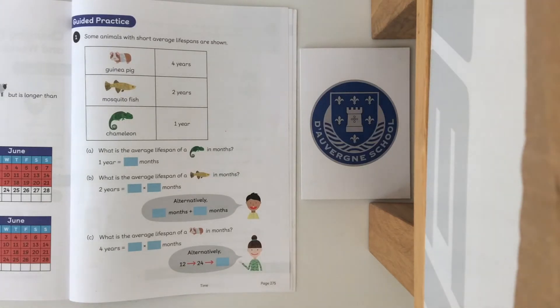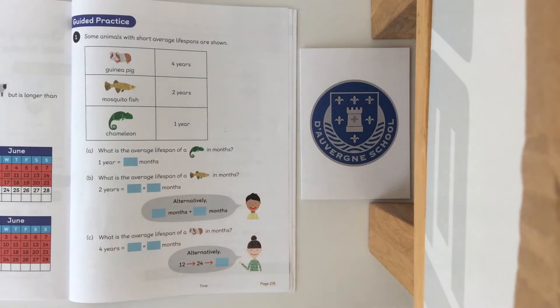Question A says what is the average lifespan of a chameleon in months? Question B what is the average lifespan of a mosquito fish in months? And question C what is the average lifespan of a guinea pig in months? Pause the video now whilst you have a go at filling in those boxes on that page.